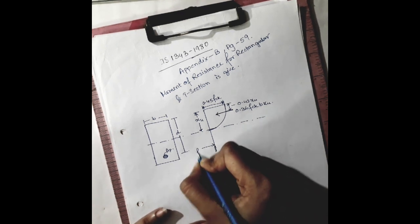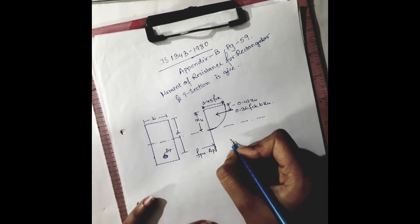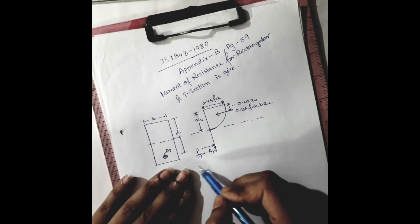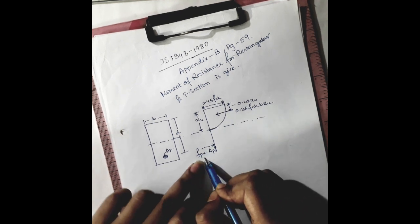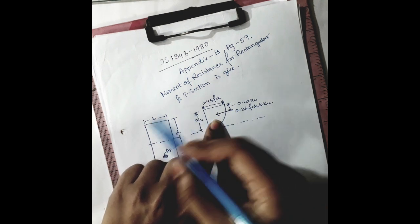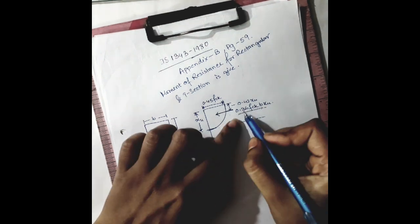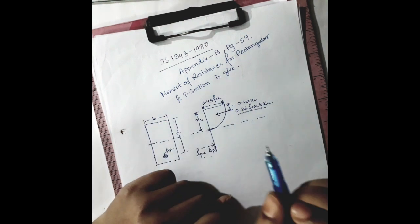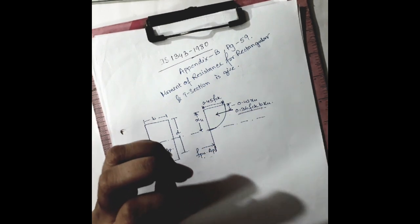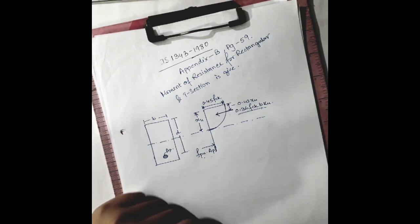The force from the stress block is 0.36 fck times b times xu. On the tension side, the force will be fpu times Ap, where fpu is the tensile stress developed in tendons at the failure stage of the beam. So tensile stress of tendon times area gives the force. The force from concrete is 0.36 fck, which is the characteristic compressive strength of concrete cube cured for 28 days, times b times xu.